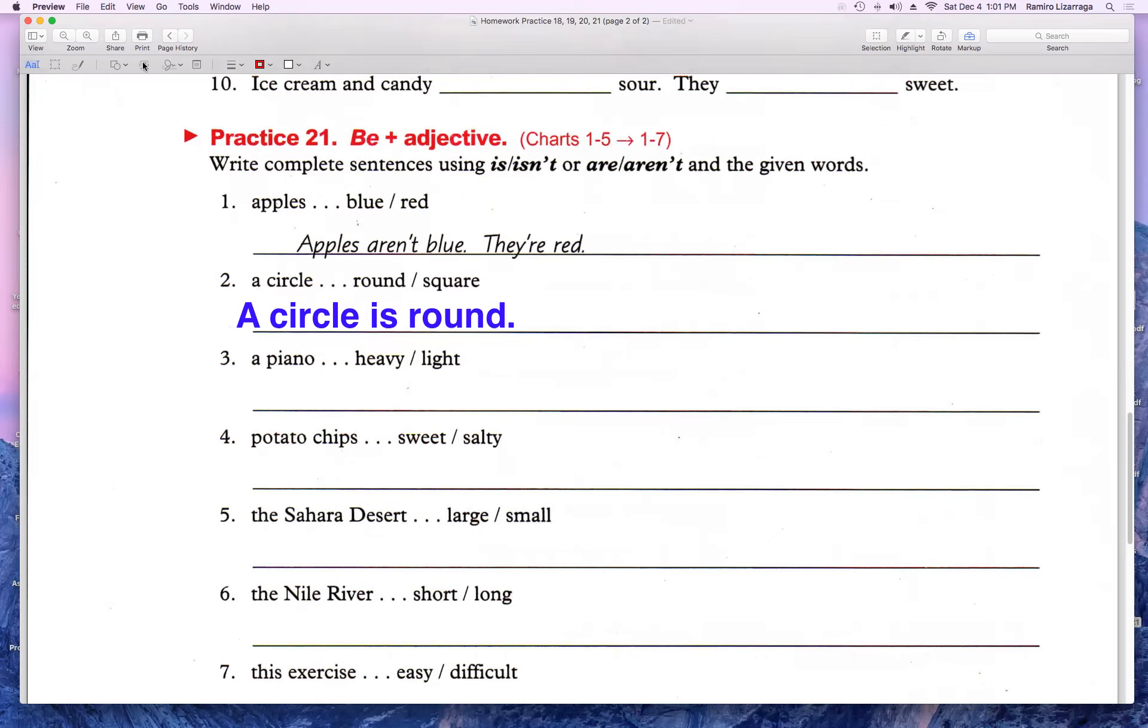Pero acá nos da square. Bueno, voy a hacer otra oración donde yo voy a negar. Entonces yo voy a decir a circle. O puedo usar el it. Pero aquí nos están pidiendo que usemos pronombres. Entonces yo voy a usar it's not square. ¿Sí se fijaron? De preferencia sí usen pronombres. En vez de decir la palabra otra vez, a circle. So a circle is round. It's not square.